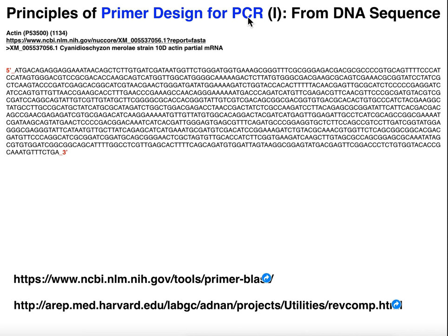In this video, we're going to discuss the principles of primer design for PCR — polymerase chain reaction. How do you get the specific forward and reverse primers given a DNA sequence such as the one shown here? This DNA sequence is the sequence for the gene for one of the actin proteins, and we can tell it's a gene because it has T's in it — it's from the DNA, it has thymine.